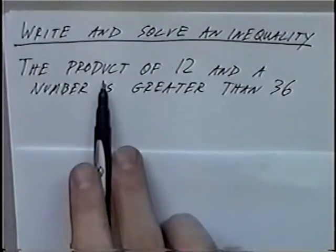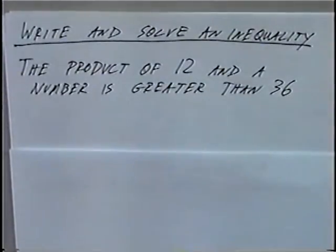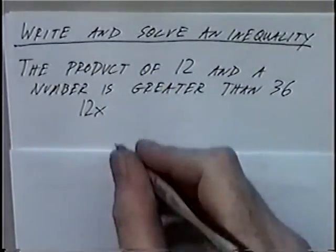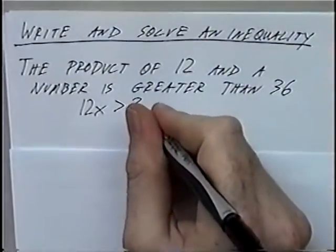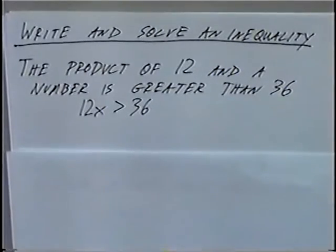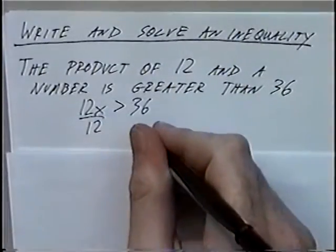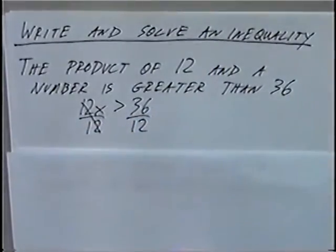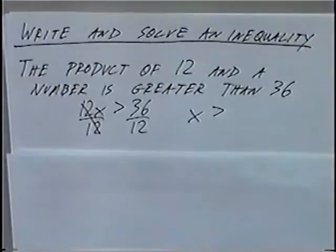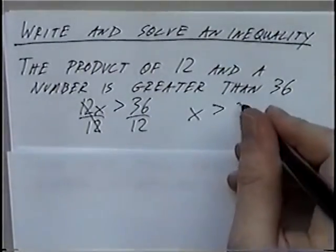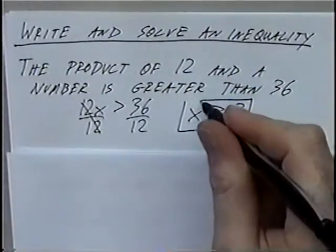To write the inequality: the product means we're multiplying 12 times x, which is 12x. 'Is greater than' is the greater than symbol, and greater than 36. So the inequality is 12x > 36. To solve, divide by 12 on both sides. The inequality stays the same when you divide by a positive number. 36 divided by 12 is 3, so the answer is x is greater than 3.